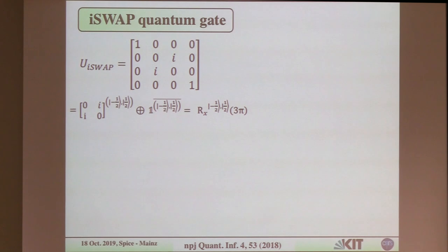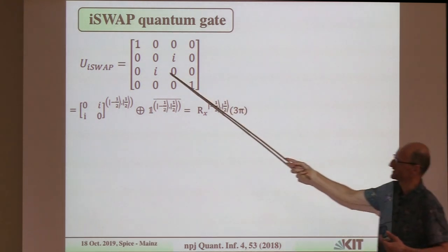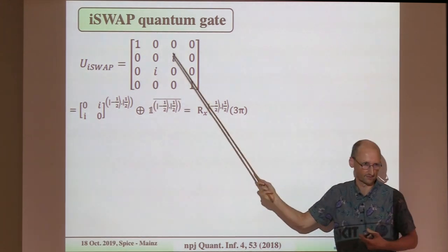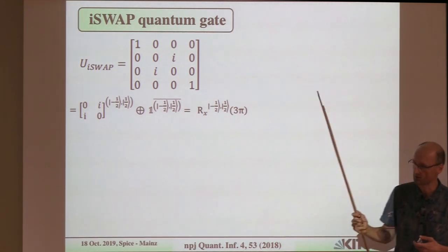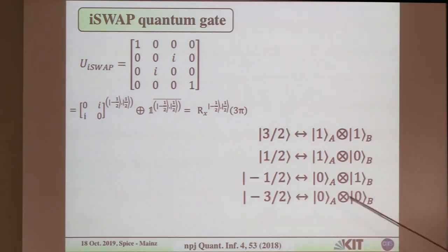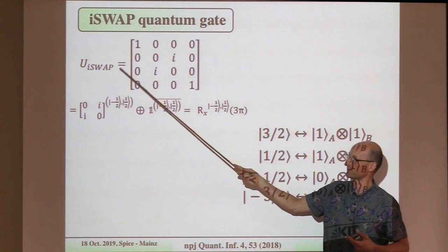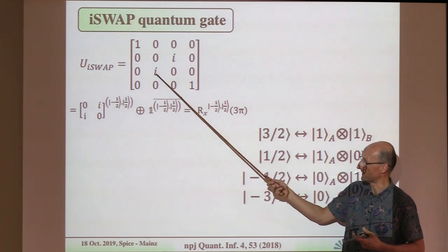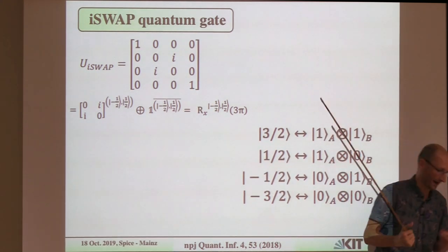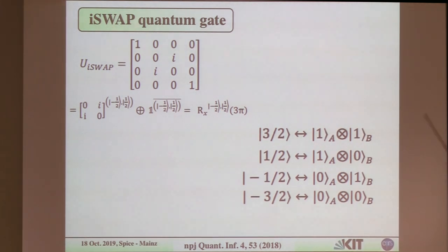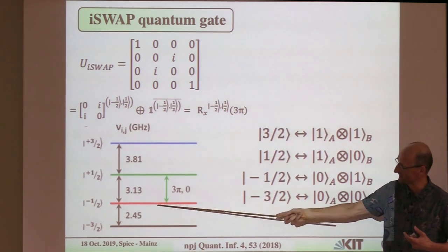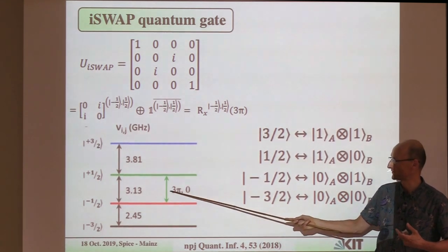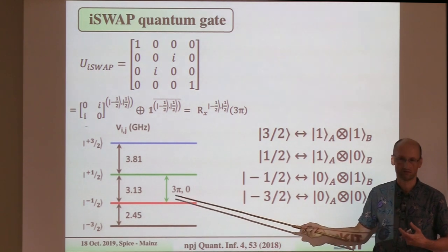When you make a real gate, you have a unitary transformation you can put in a matrix. For a 2-qubit system, you can map a 4-level system onto a 2-qubit system. Looking at this matrix, we have an iSWAP gate — you swap two qubits and multiply each state by a phase factor of i. In the basis of the 4-level system, this iSWAP gate corresponds to a 3-pi pulse between two levels under this mapping.